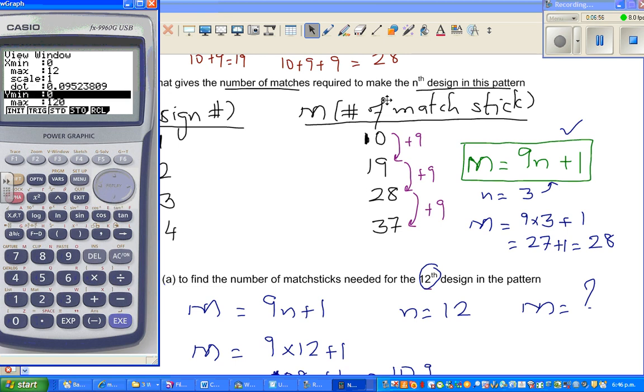And I've set my y, which is for the number of matchsticks, from 0 to 120, because I know the maximum I want to go is 109. So I put in 120 in a scale of 10. And then graphic. This is your gradient, and this is your y-intercept. So this y-intercept is 1.